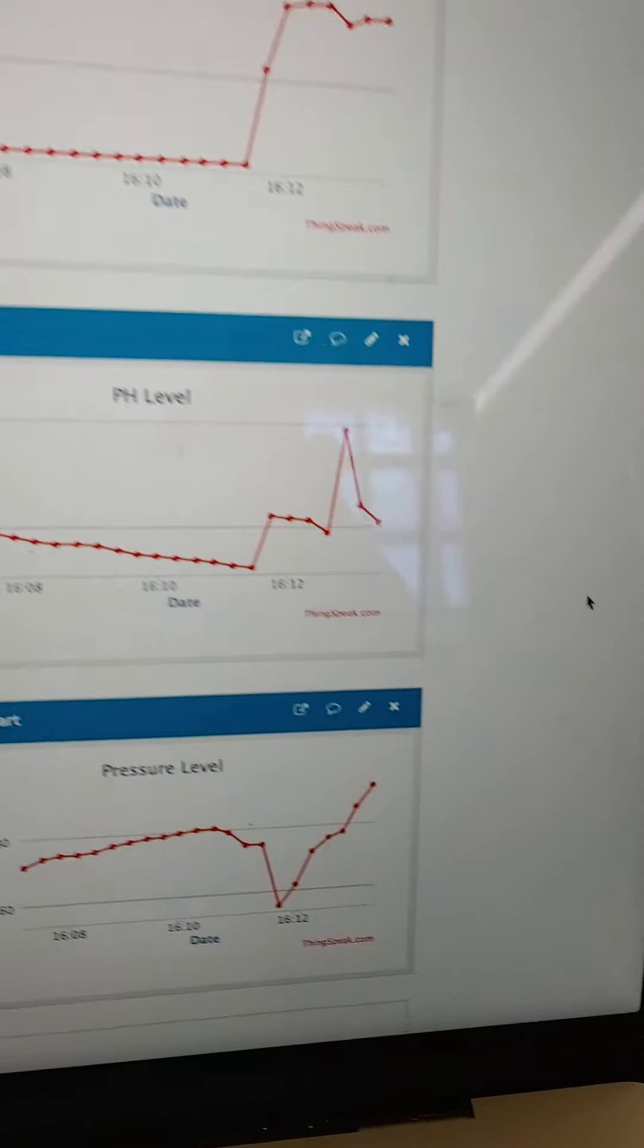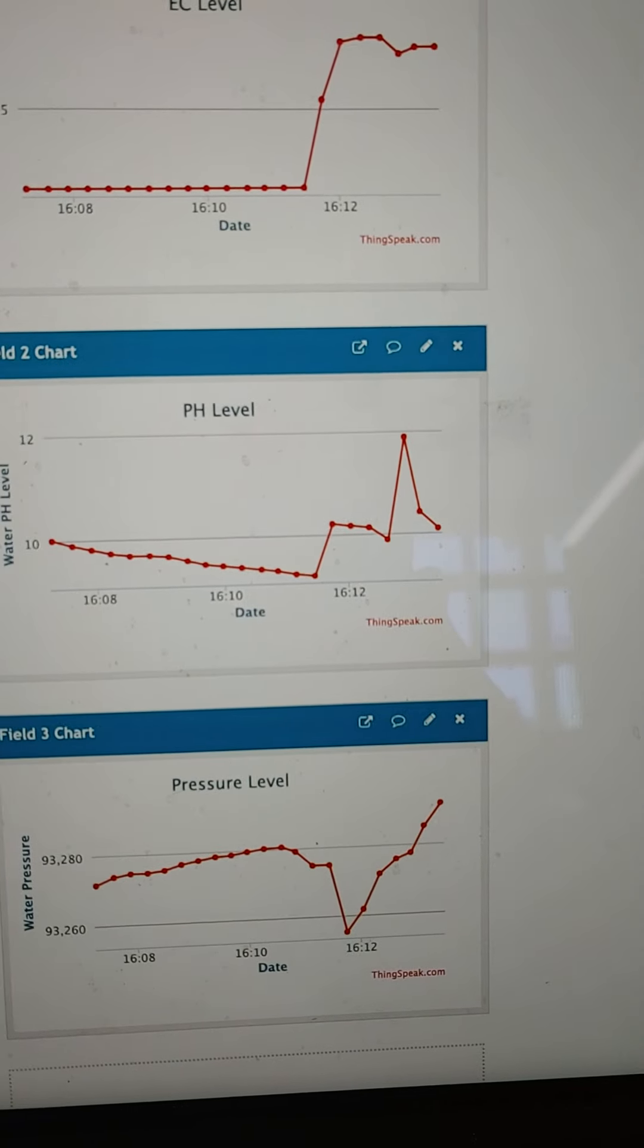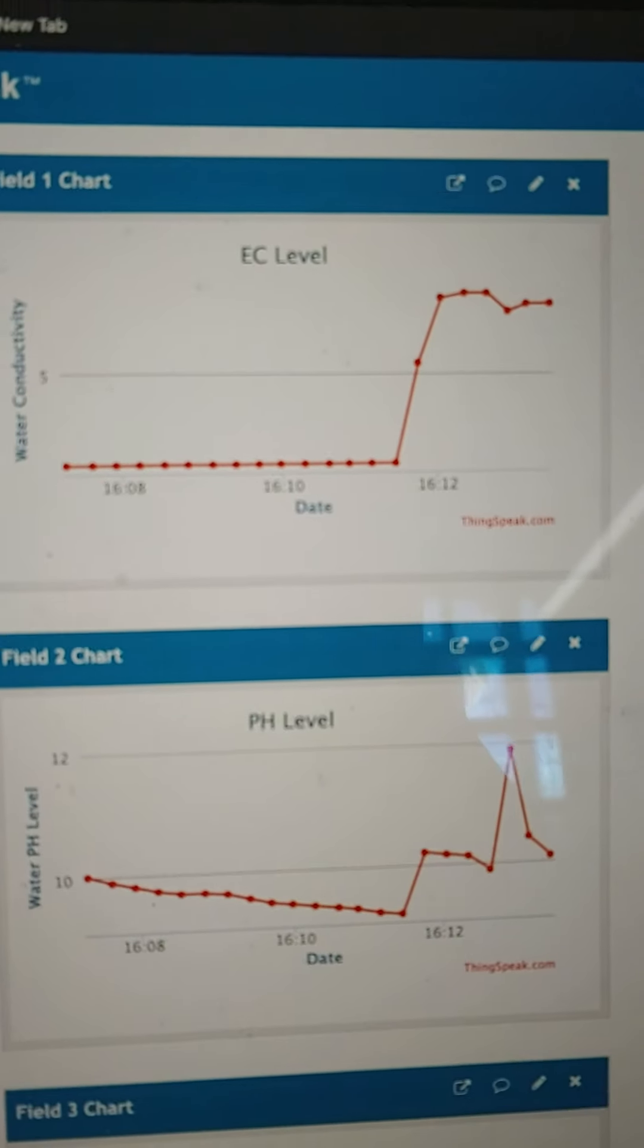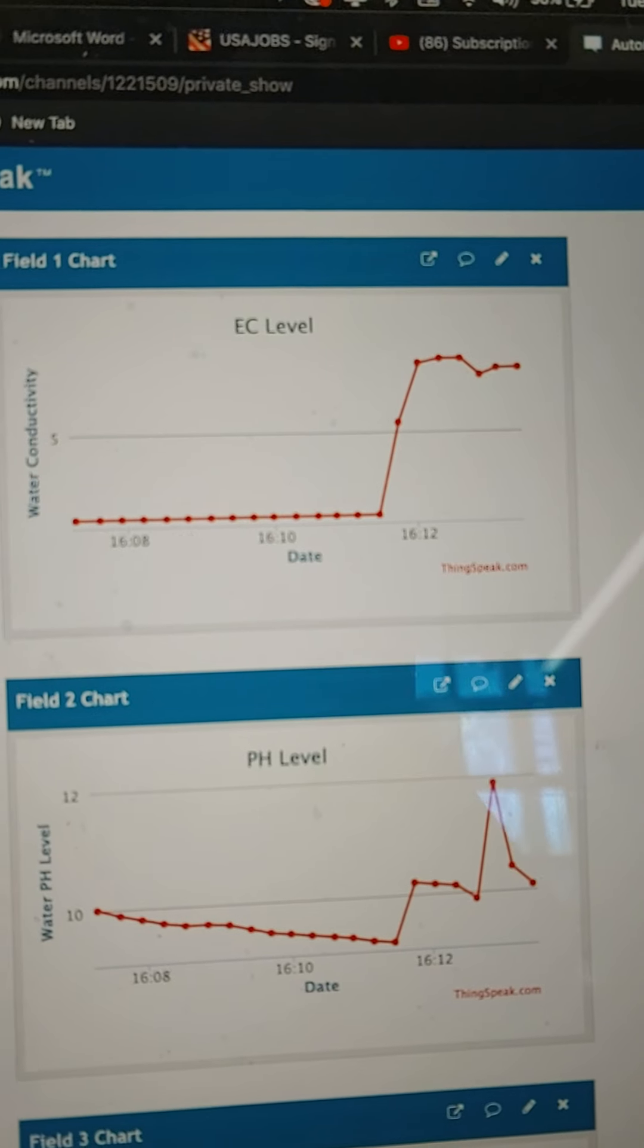And the sensor picks it up. And because of that we get that dip. But you see the pressure is rising because of the liquid. As well as the pH, we have a steady increase as well as the EC increase.